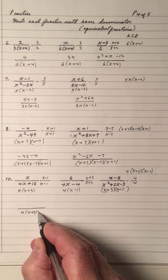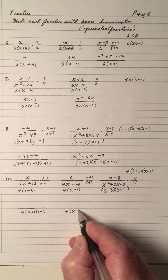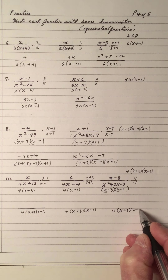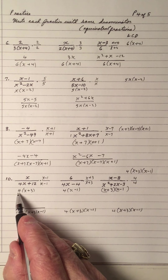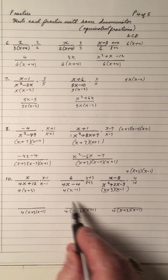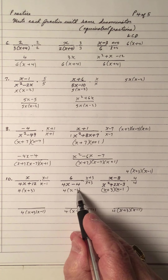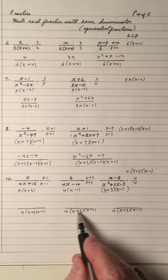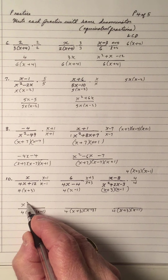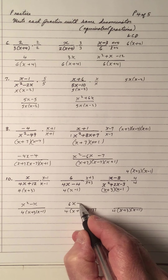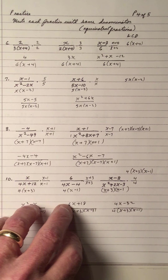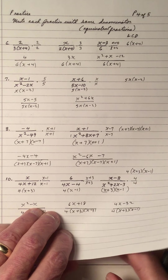Write them all down the same way — even though the order on the top is not identical. Notice I have 4 times x plus 3 times x minus 1, and this is 4 times x minus 1 times x plus 3, but if I write all these the same way, the product of 4, x minus 1, and x plus 3 is still the same — because the order in multiplication makes no difference. Multiply the numerators: x times x minus 1 is x squared minus x; 6 times x plus 3 is 6x plus 18; and x minus 8 times 4 is 4x minus 32.